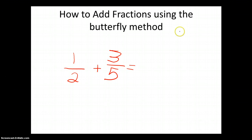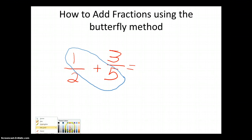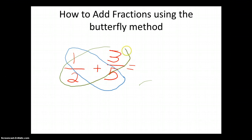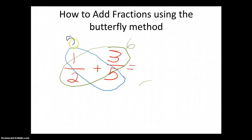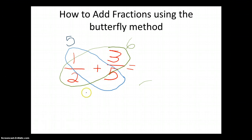What does that mean? Well, my first step is to cross-multiply. I'm going to circle these two that are diagonal from each other, then circle these other two that are diagonal from each other. So now what I'm going to do is multiply on the diagonal. Two times three is six. And then I would multiply on the other diagonal — five times one is five. Now I have my numerators. What do I do with that pesky denominator? It's very simple: five times two is ten.